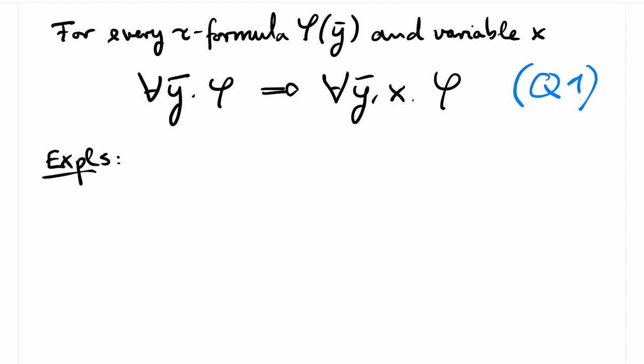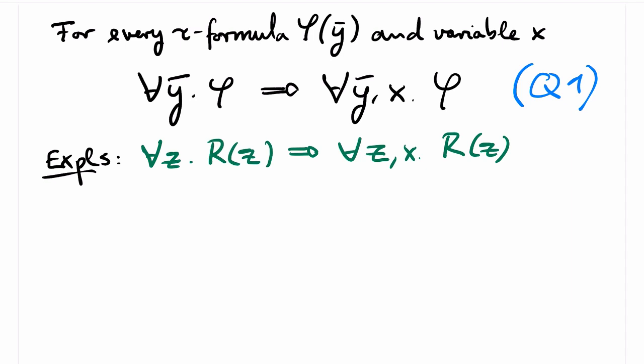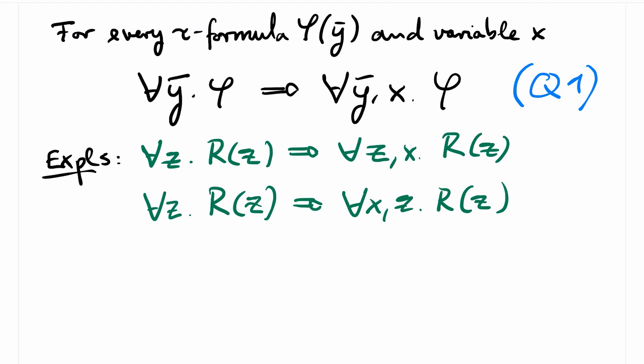I will present two concrete instances of Q1 for the signature that contains a single unary relation symbol R. The first is: ∀z R(z) → (∀z ∀x R(z)), where we instantiate φ with the formula R(z). The second example is: ∀z R(z) → ∀x ∀z R(z). Note that here the order of the variables x and z is flipped, because here we instantiated φ with the sentence ∀z R(z), and the universally quantified string of variables y in Q1 is empty.